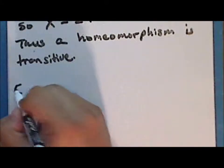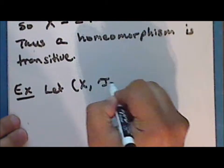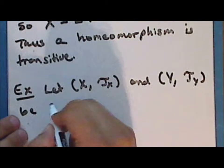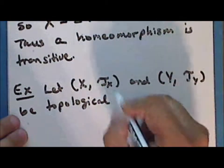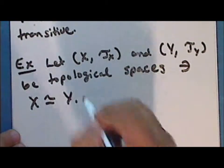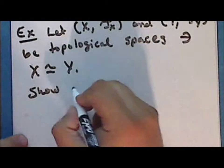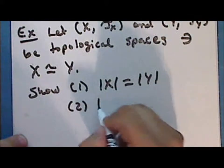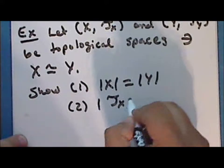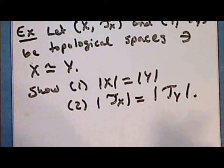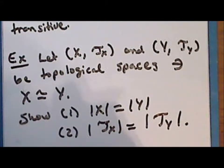So as an exercise, let X with topology tau sub X and Y with topology tau sub Y be topological spaces such that X is homeomorphic to Y. Show that the cardinality of X is the same as the cardinality of Y, and show that the number of open sets in the topology on X is the same as the number of open sets in the topology on Y. Okay, so we'll end here for today. Next time we will continue to look at equivalence relations and homeomorphisms. I hope you have enjoyed the 20th lecture. Thanks for watching.